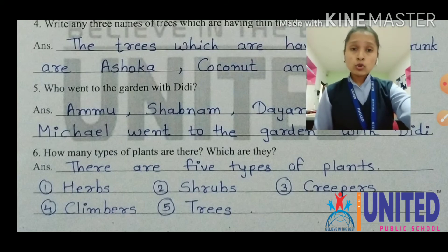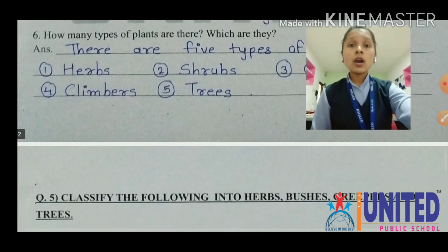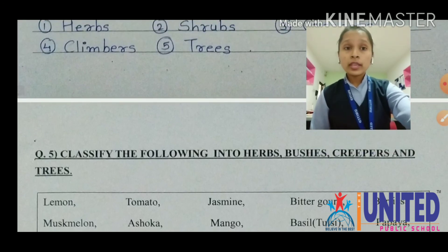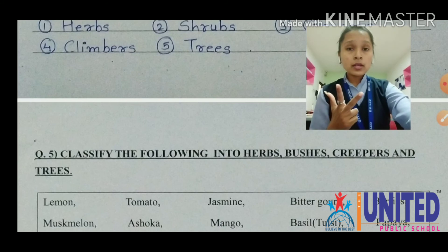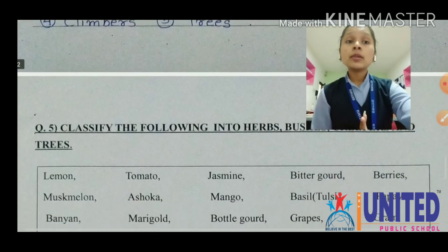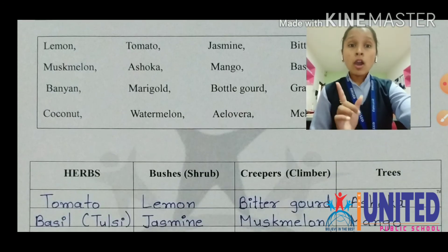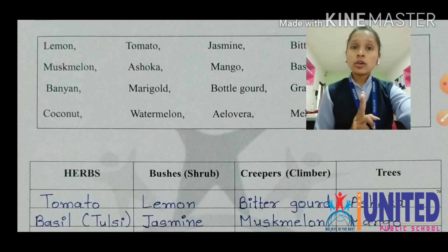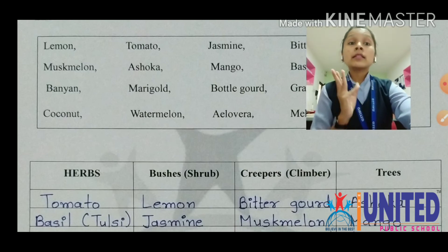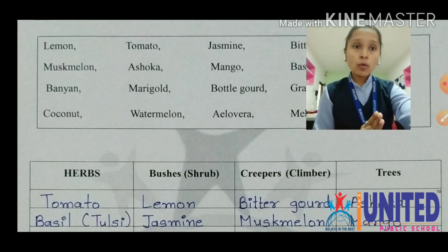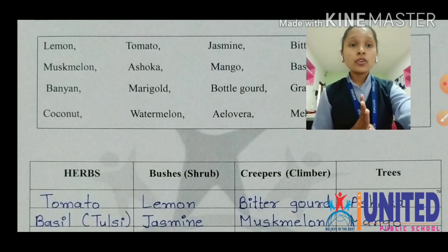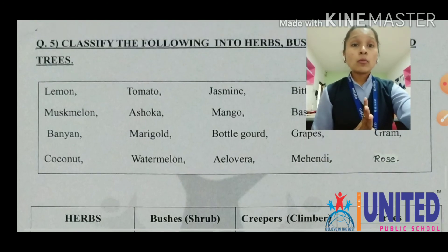Question number five: classify the following into herbs, bushes, creepers, and trees. The items will be classified into herbs, bushes or shrubs, creepers or climbers, and trees. Ma'am will explain orally.